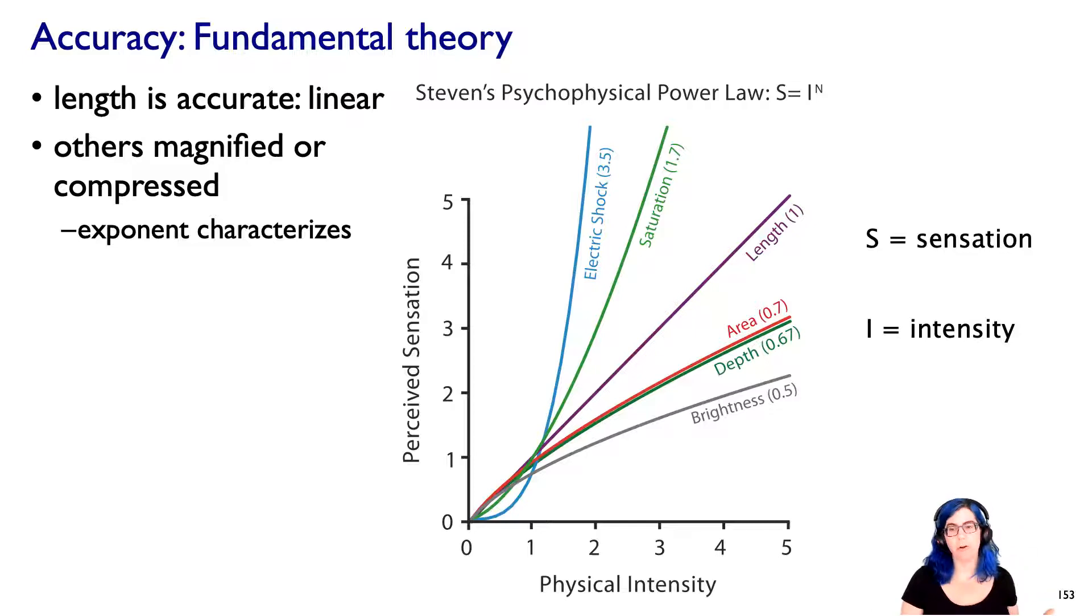So we'll notice that we see things like area and three-dimensional depth into the scene and brightness as examples of compression. And then there's some magnification for things like saturation, right? A giant thing of color compared to a small thing of color. And even electric shock, although that's not as brutal as it seems, it's more of a tingling in the fingertips. They actually did these studies on many, many kinds of modalities. I'm not going to get into the ones about things like weight and smell and all that. We're going to focus on the visual in the rest of this.